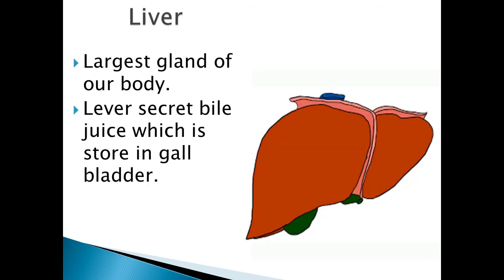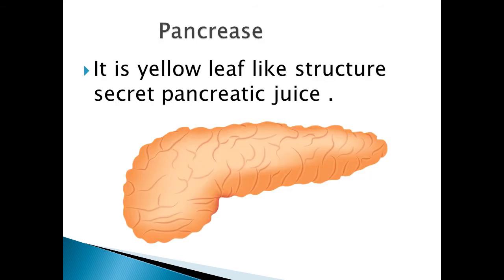Second is the liver. Liver is the largest gland of our body and it secretes a juice that is called bile juice, which is stored in the gallbladder. Third is the pancreas. It is a yellow leaf-like structure which secretes a juice that is called pancreatic juice.